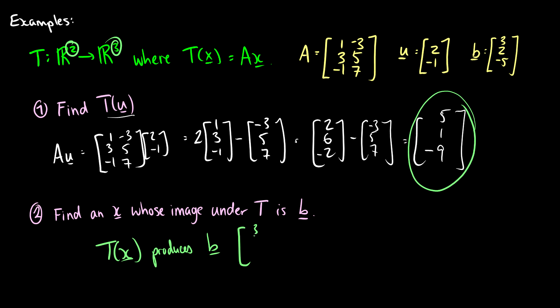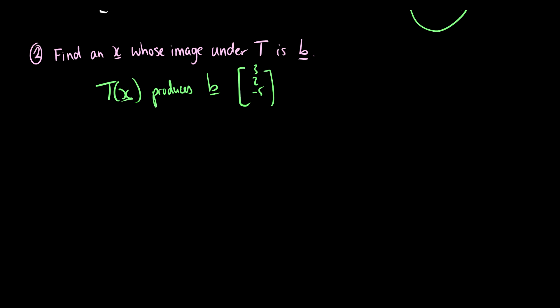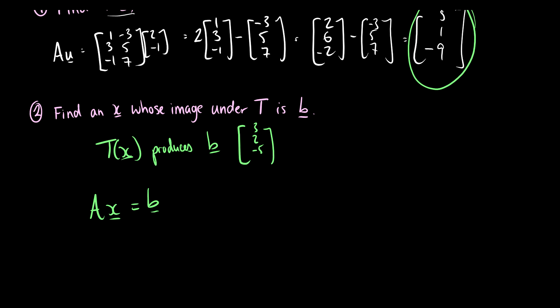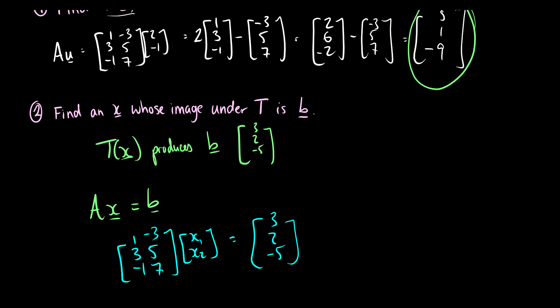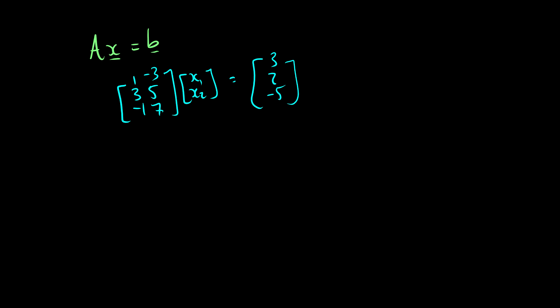So b is [3, 2, -5]. We know our matrix A and we want to find x such that A times x equals b. Our matrix A is [1, 3; -1, -3; 5, 7] and we multiply by a vector [x1, x2] to get [3, 2, -5]. To solve, we form an augmented matrix: [1, 3 | 3; -1, -3 | 2; 5, 7 | -5]. Let's row reduce.